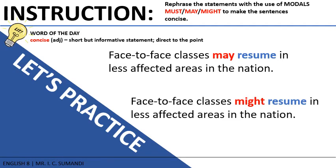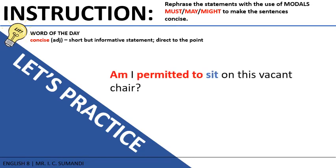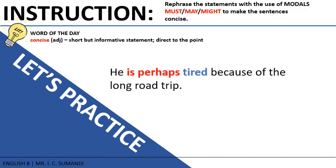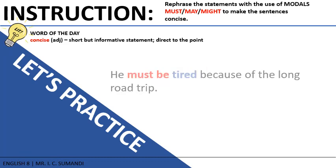Next: 'Am I permitted to sit on this vacant chair?' Since we are asking for permission, we use the verb modal may: 'May I sit on this vacant chair?' Then: 'He is perhaps tired because of the long road trip.' Since this shows assumption or logical conclusion, we use must: 'He must be tired because of the long road trip.'